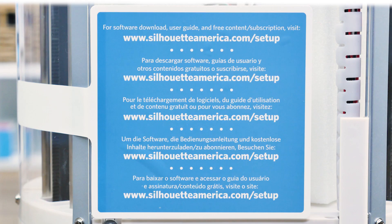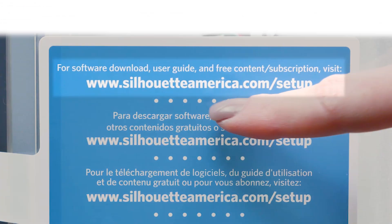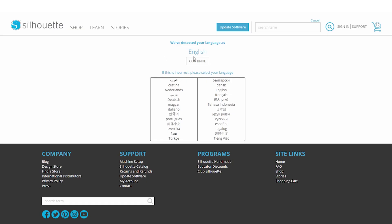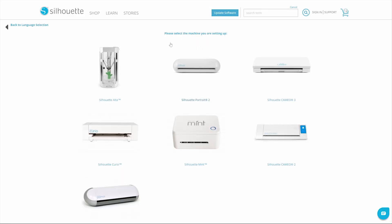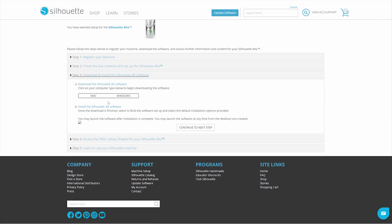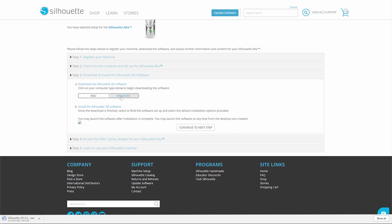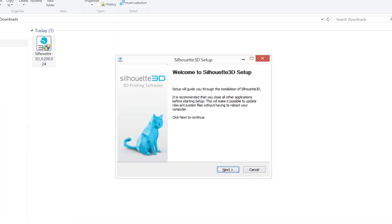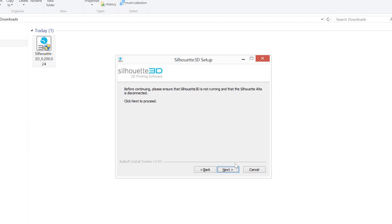To download the software, go to SilhouetteAmerica.com/setup. Select a language and then select the Alta machine. Click on Step 3: Download and install the Silhouette 3D software. Click on the option for your operating system. Once the download is complete, run the installation file and proceed through the on-screen steps to install and set up your software.